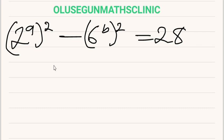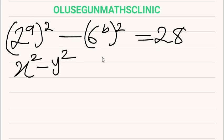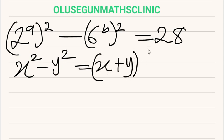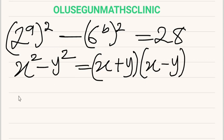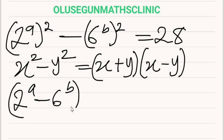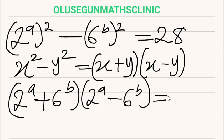Now you can see this has the formation of the difference of two squares, which says x squared minus y squared is equal to (x plus y)(x minus y). So, relating to this, you can now write this as: 2 raised to power A plus 6 raised to power B, multiplied by 2 raised to power A minus 6 raised to power B, is equal to 28.